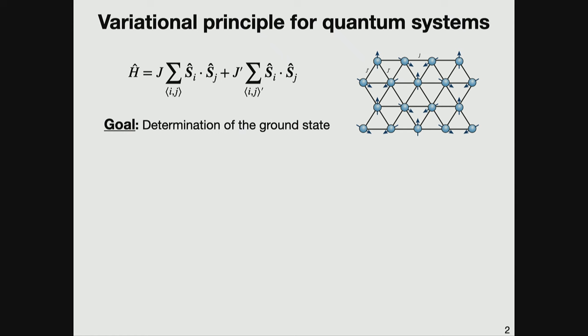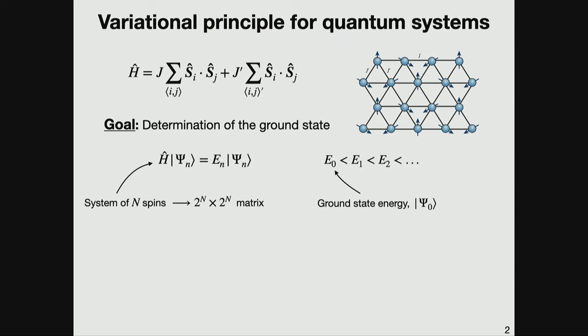I will give a brief introduction on the variational principle for quantum systems. Our goal is the determination of the ground state of some many-body spin Hamiltonian on a lattice. In principle, the problem can be solved by storing all the matrix elements of the Hamiltonian in a given basis on a computer and then diagonalizing it to obtain the full spectrum — in particular, the ground state energy and the corresponding eigenvector. The problem is that for a system of n spins, this matrix for spin-1/2 is 2^n × 2^n, so this brute force approach cannot be applied as the system size increases.